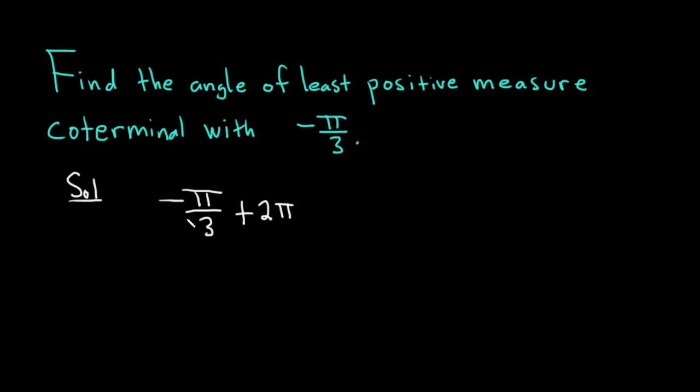Now we should simplify this. So in order to add negative pi over 3 to 2 pi, remember that 2 pi can be written as a number over 1, and then what you can do is multiply this by 3 over 3.